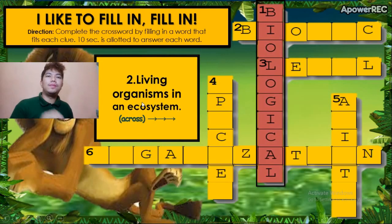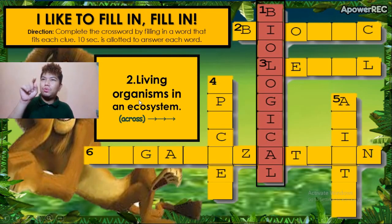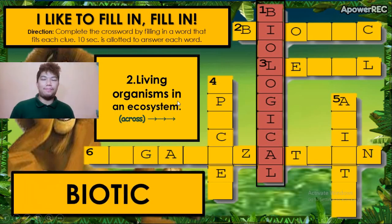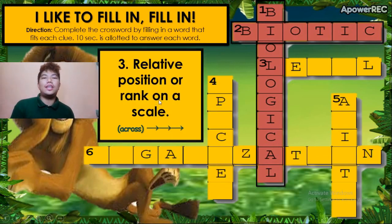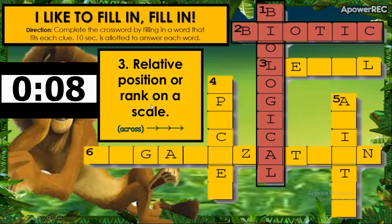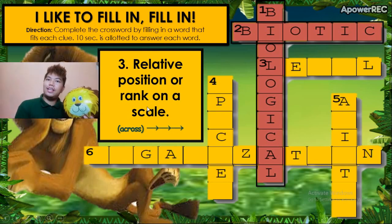Clue number two: living organisms in an ecosystem. If you think the answer is 'biotic,' you are correct. Clue number three: relative positions or rank on a scale. If your answer is 'level,' you are correct.